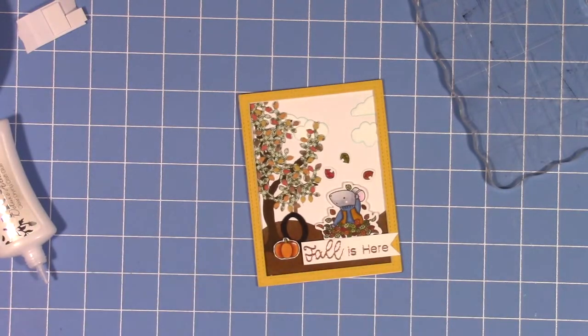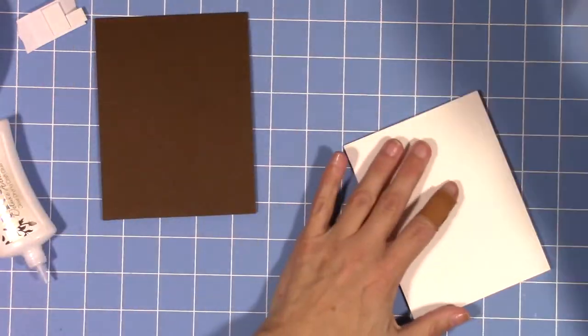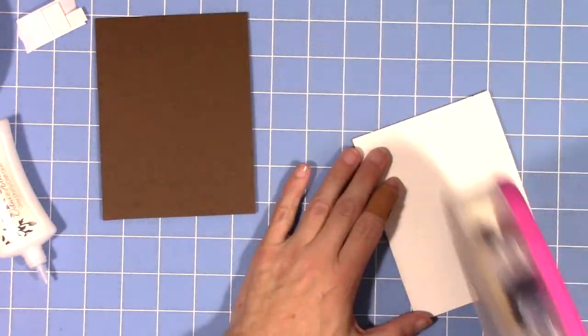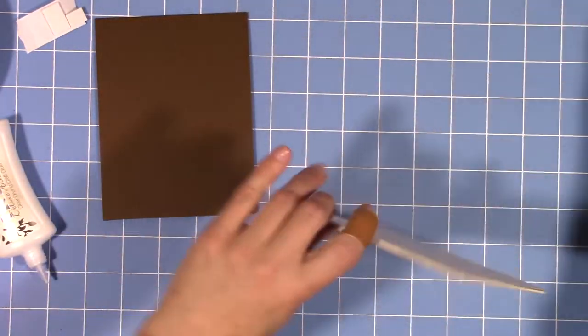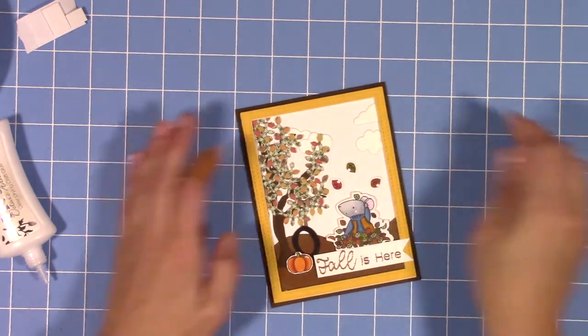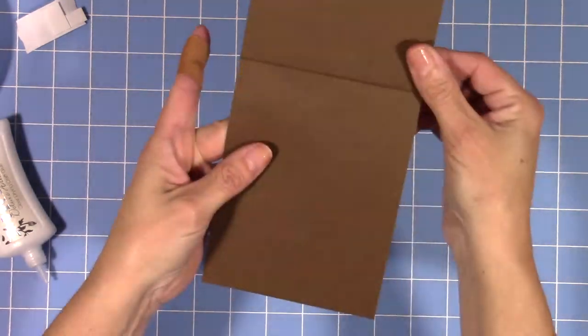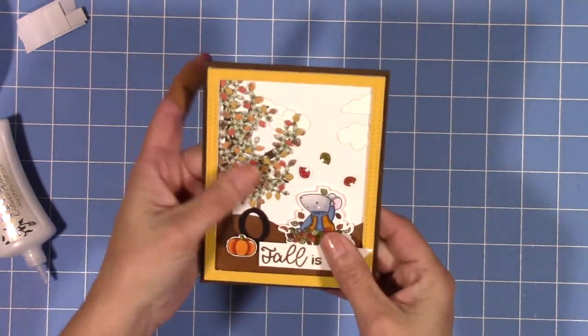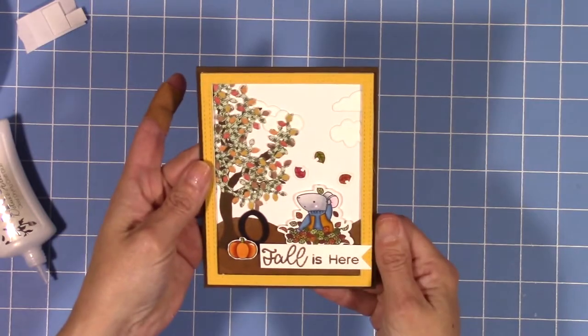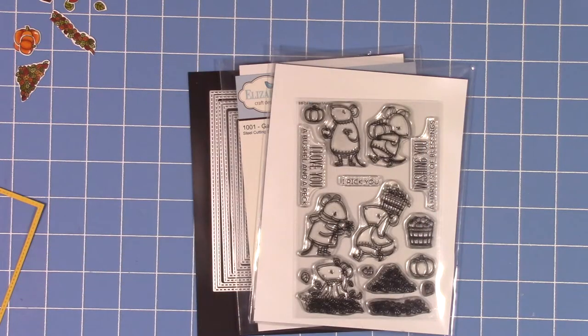Once I've popped up my sentiment, it's just putting it on the card base and attaching it down with my ATG gun. I'm trying to do three cards with each stamp set and trying to do something a little different with each one. I love scene building, so it's really hard for me to get away from it. I'm not a watercolorist or funky background person, I'm more of a scene builder.